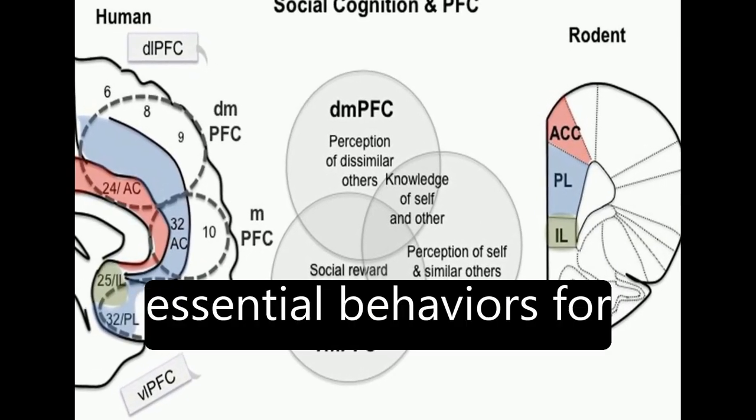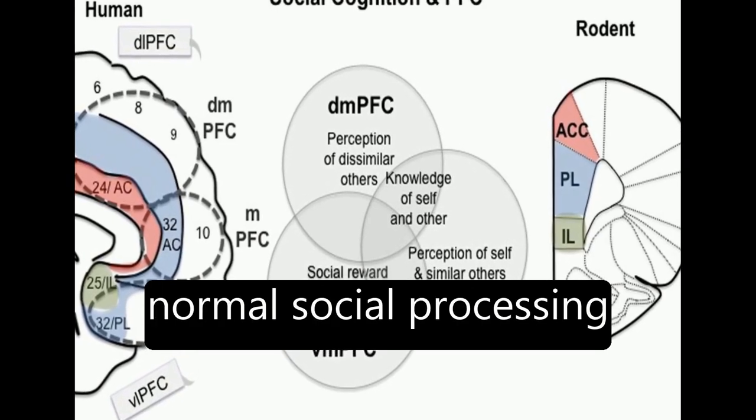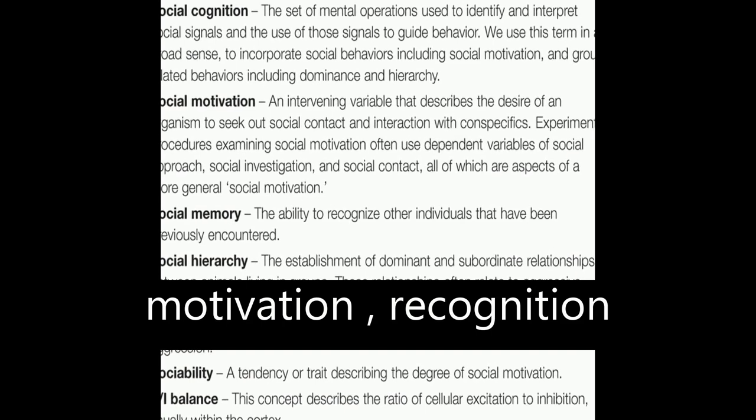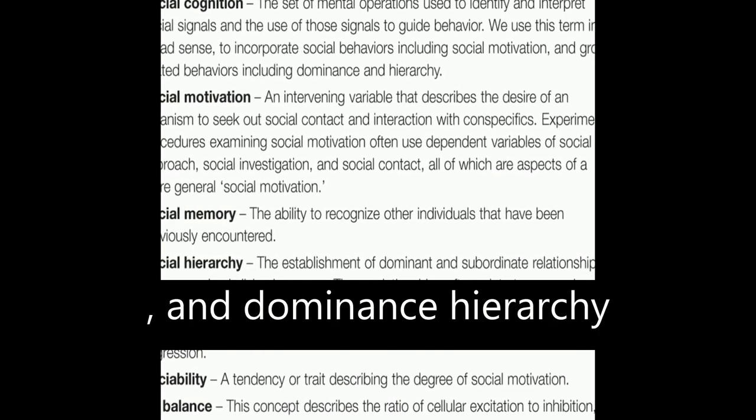The authors review three essential behaviors for normal social processing in rodents and humans, including social motivation, recognition, and dominance hierarchy.